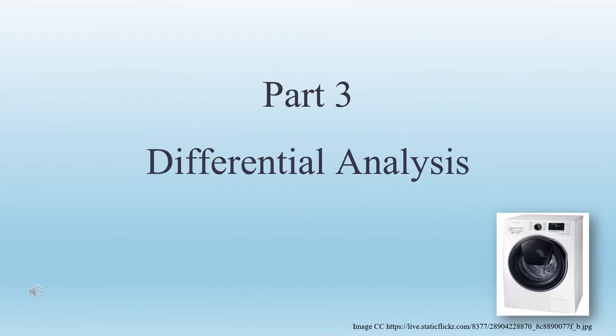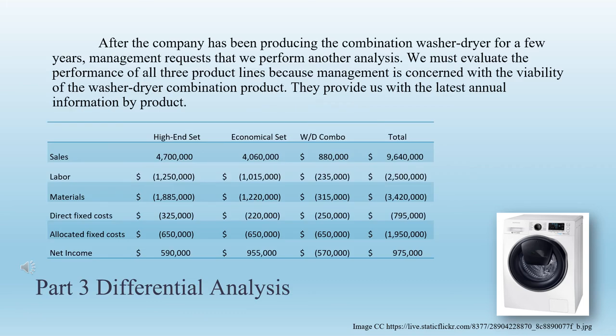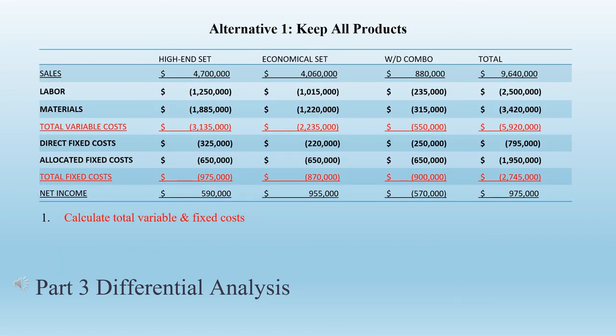Part 3: Differential Analysis. After the company has been producing the combination washer-dryer for a few years, management requests another analysis to evaluate the performance of all three product lines due to concerns about the viability of the washer-dryer combination product. The first step in a differential analysis is to compare two alternative courses of action. Alternative one is to keep all product lines. Step 1: calculate total variable and fixed costs. For the high-end set, total variable costs are $3,135,000; economical, $2,235,000; washer-dryer combo, $550,000; for total variable costs of $5,920,000. Total fixed costs: high-end $975,000, economical $870,000, washer-dryer combo $900,000, totaling $2,745,000.